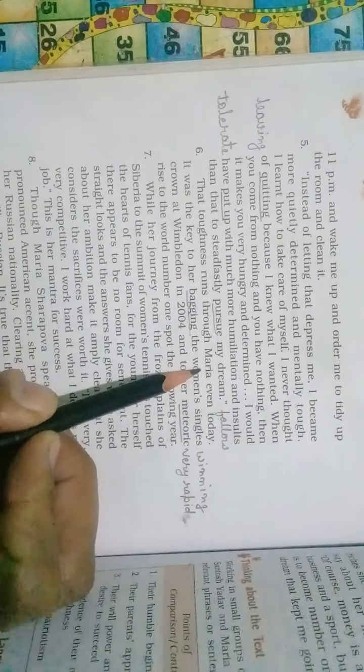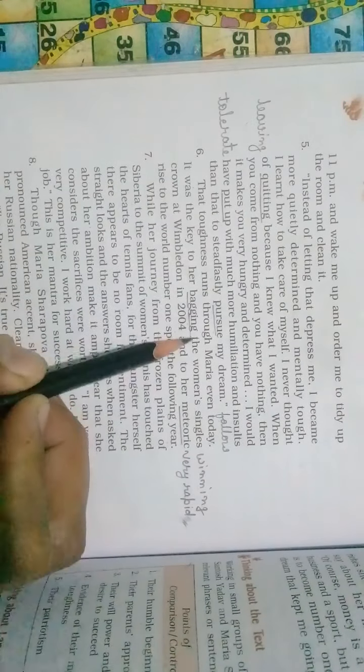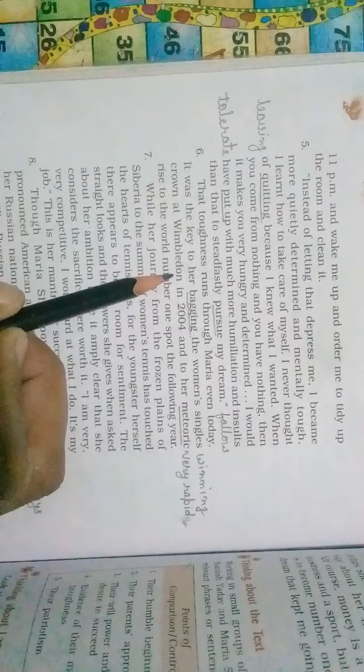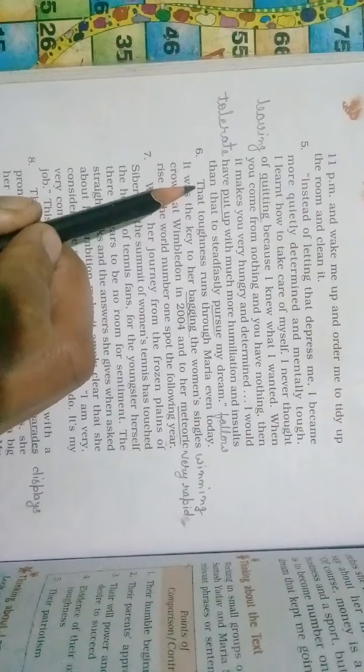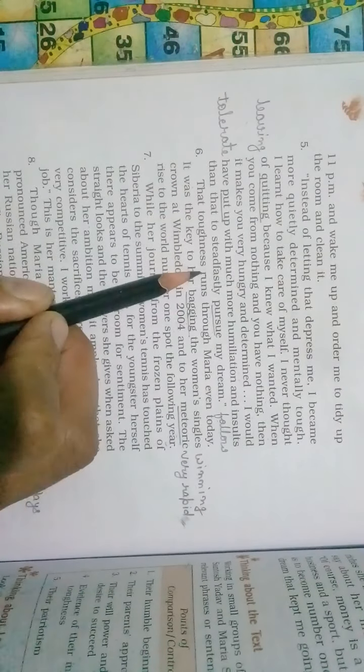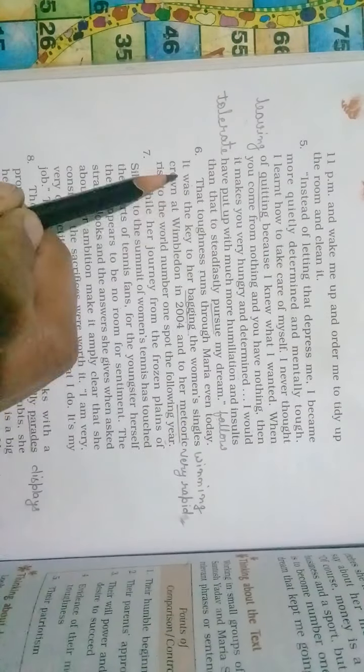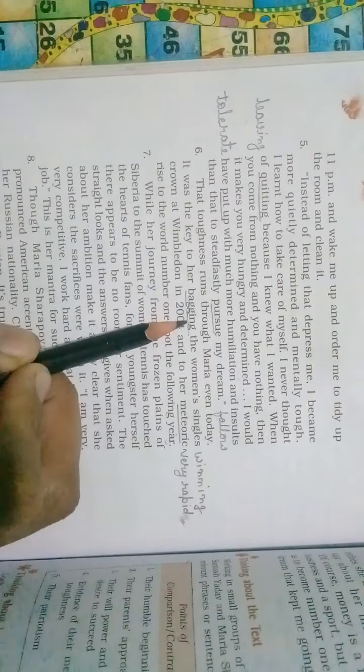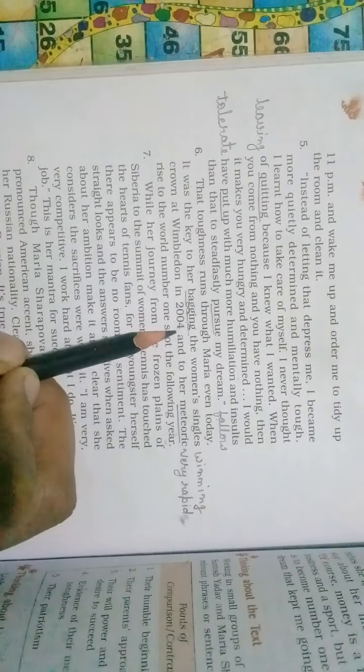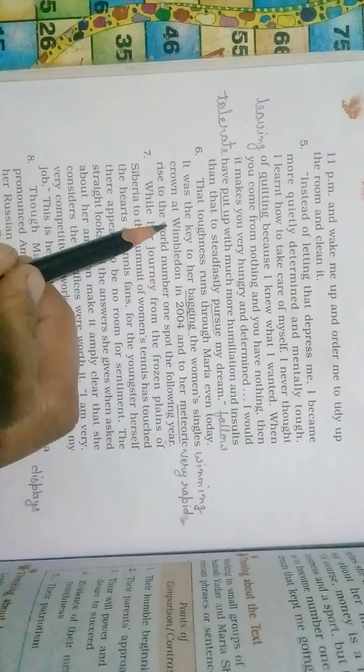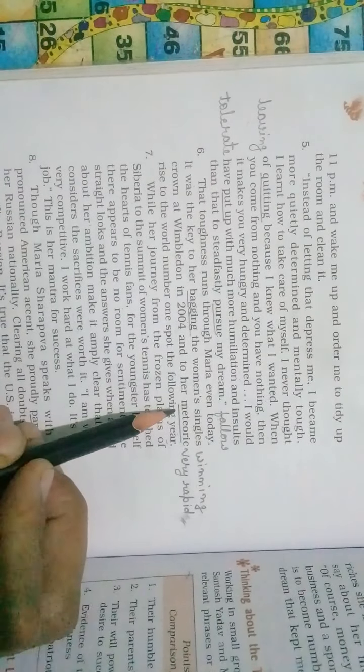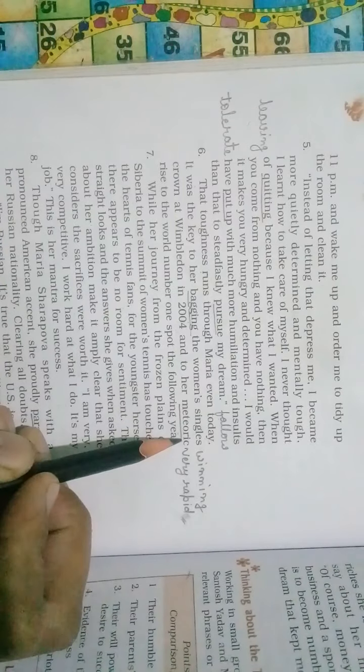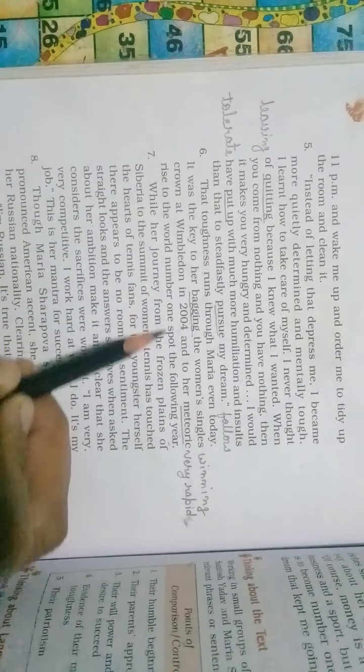That toughness runs through Maria even today. It was the key to her bagging the woman's single crown at Wimbledon in 2004 and to her meteoric rise to the world number one spot the following year. So we can see the toughness in Maria even today. It was the key to her bagging, bagging means winning, the woman's single crown at Wimbledon in 2004. Due to her toughness, she won the crown at Wimbledon in 2004. And her success was very rapid that took her to the world number one position.